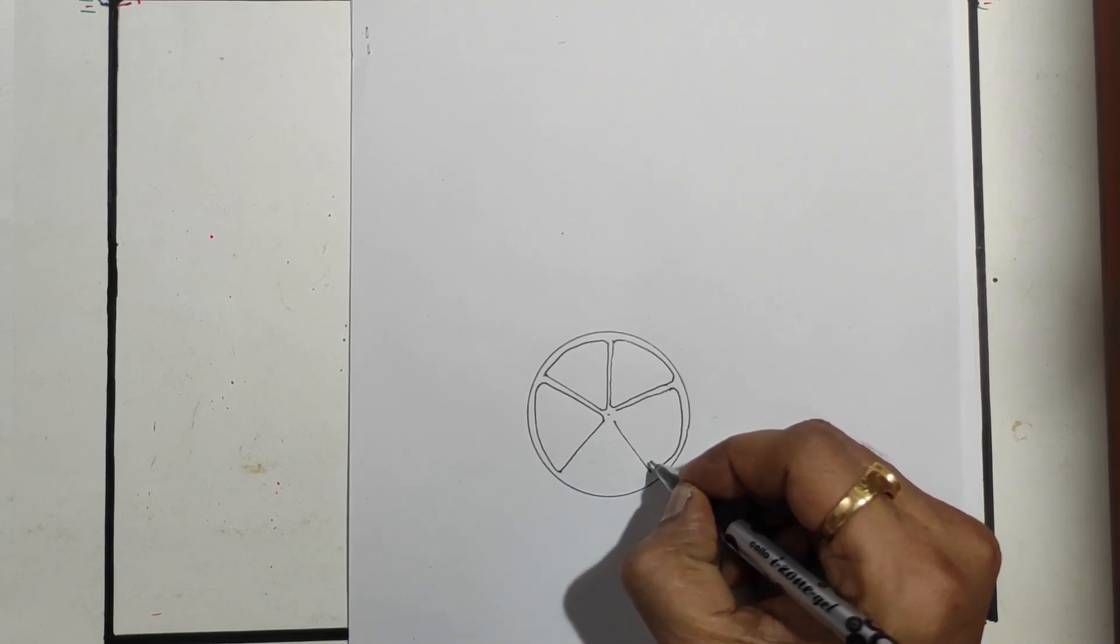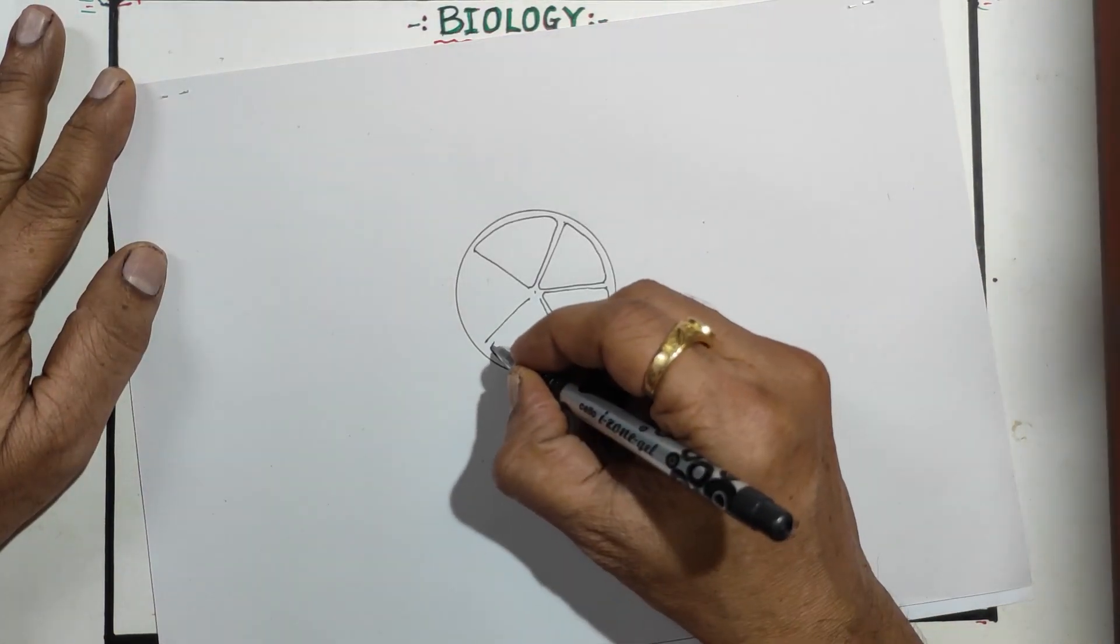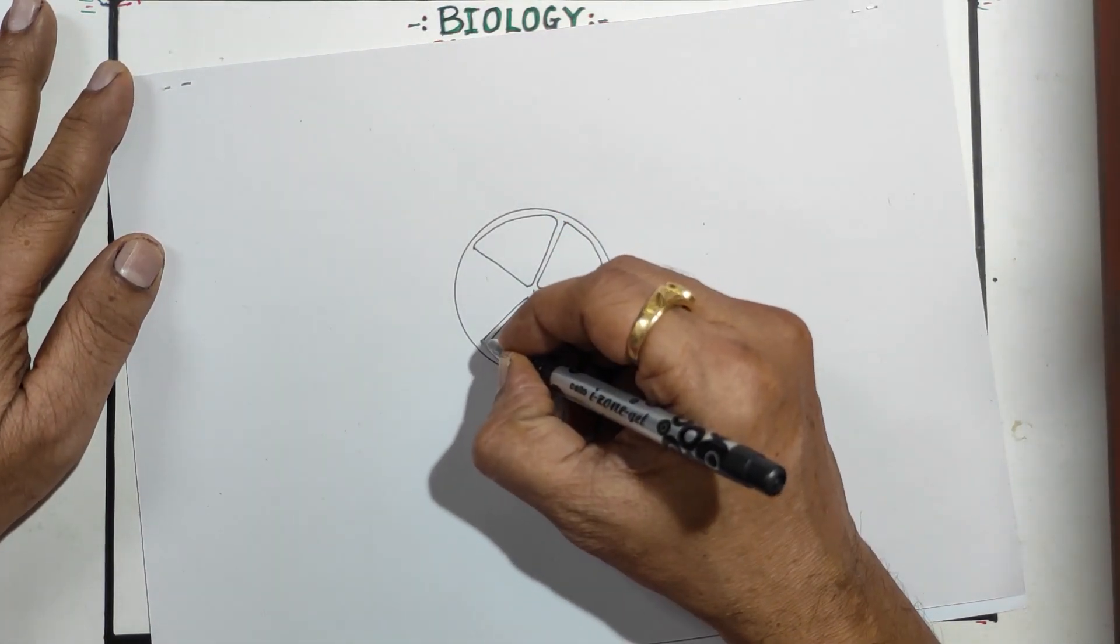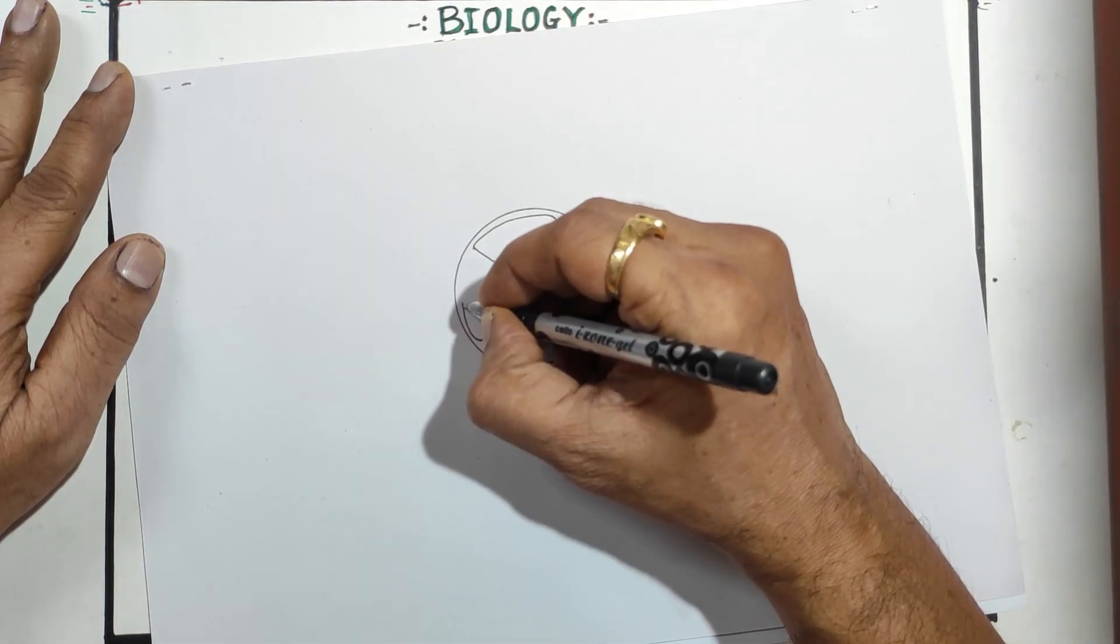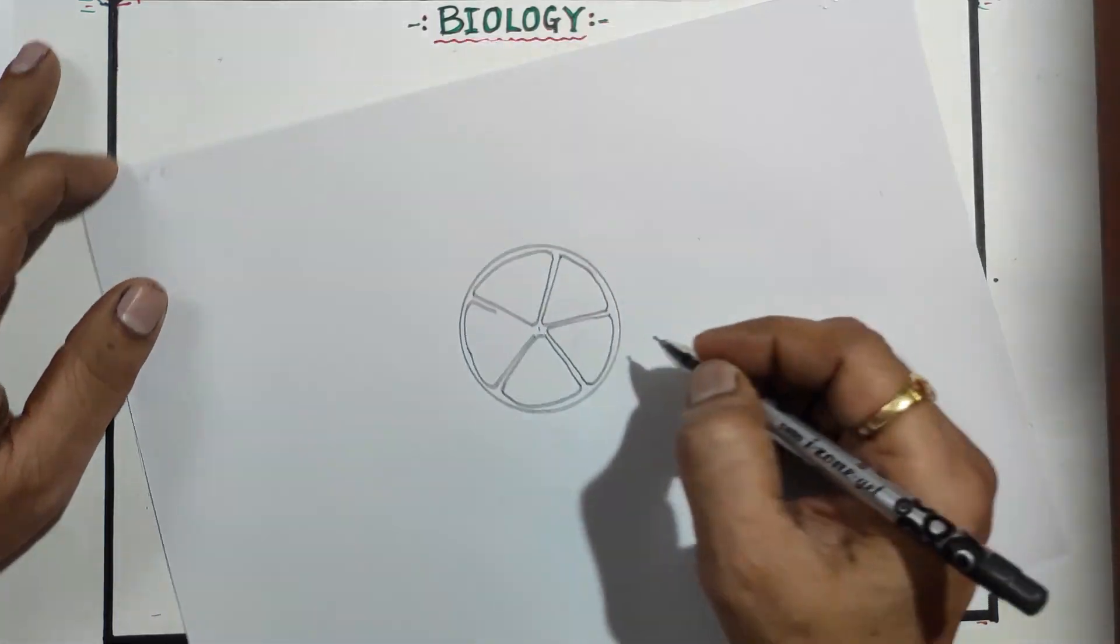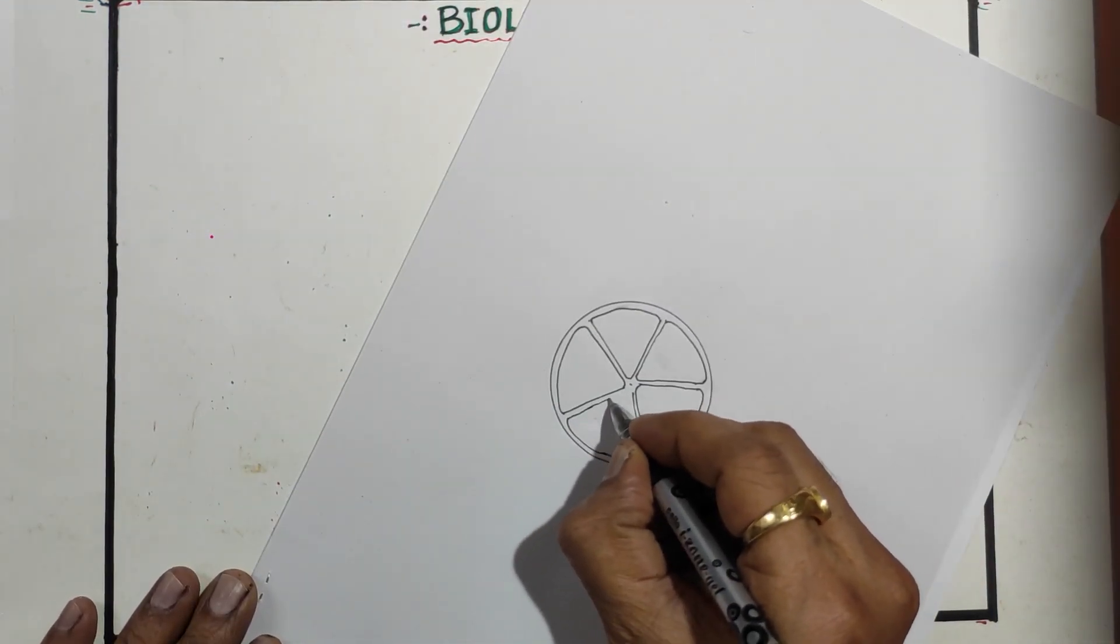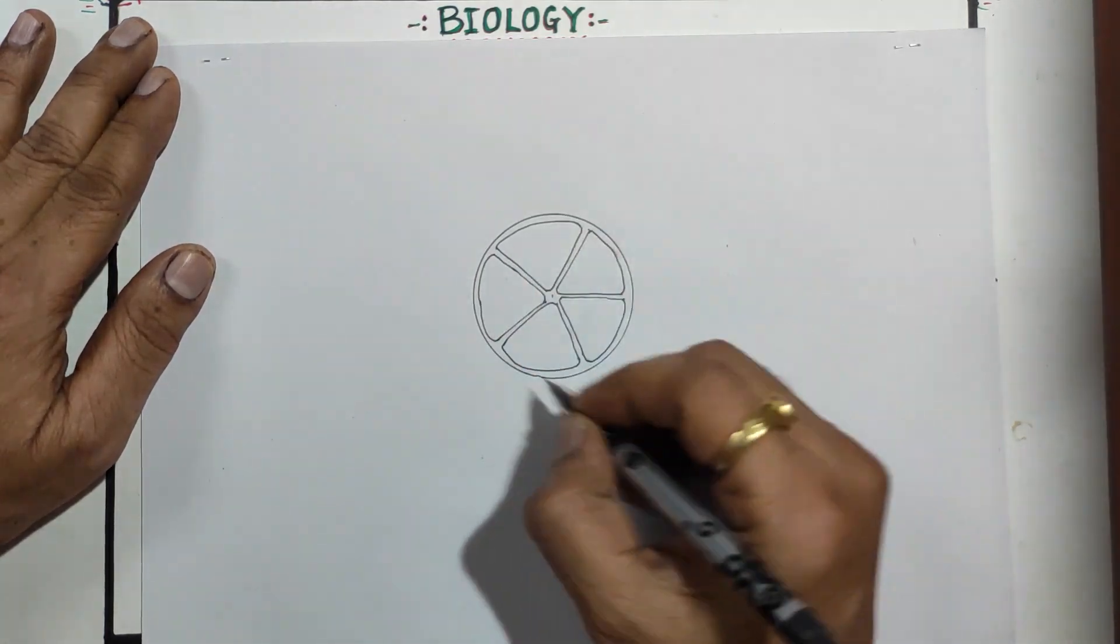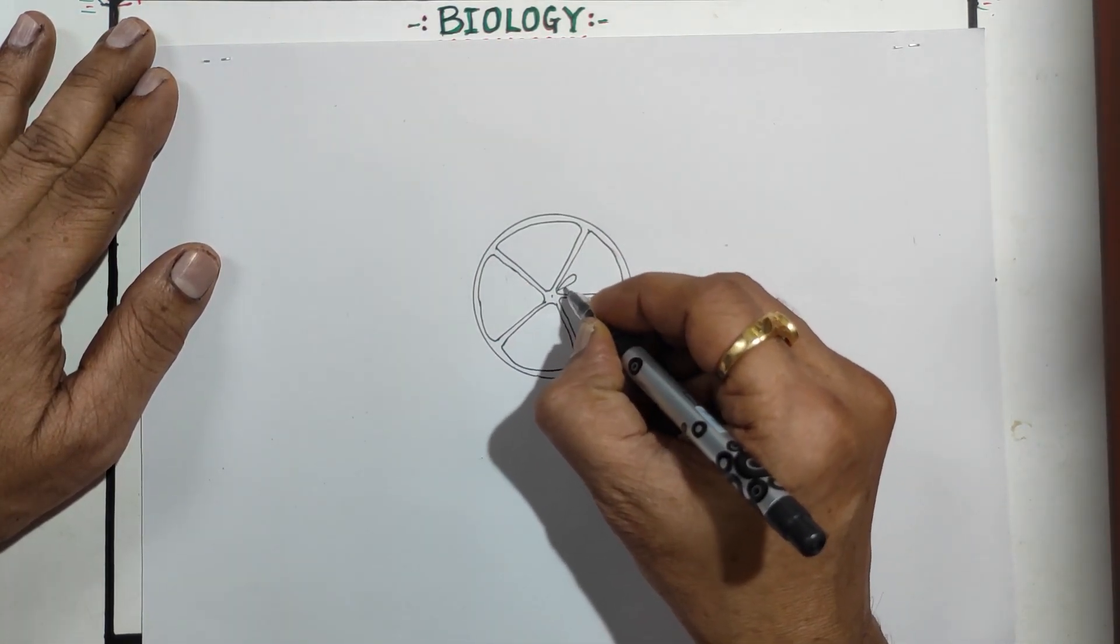Same way from here draw continuous and then bring it down and touch here. So here we got the five locules of the ovary. Now inside that we have to draw the ovules, draw two or three ovules.